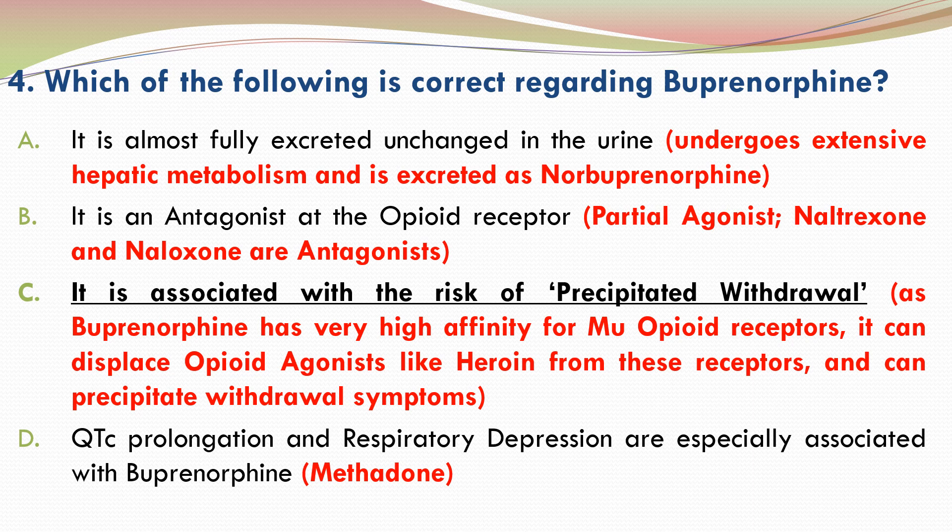A is incorrect because Buprenorphine undergoes extensive hepatic metabolism and is excreted as norbuprenorphine. B is incorrect because Buprenorphine is a partial agonist at the opioid receptor — Naltrexone and Naloxone are opioid receptor antagonists. D is incorrect because QTc prolongation and respiratory depression are especially associated with methadone. So the correct answer is C.